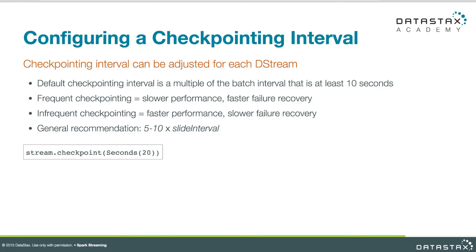Checkpointing is a periodic thing — it happens every so often, and determining that period is a key engineering decision. More frequent checkpointing means recovering from a failure will be quicker; there's less to replay when you come back up after a failure. However, that's more overhead — each checkpoint causes more file I/Os and more overhead in general, so we'd rather not do it too often.